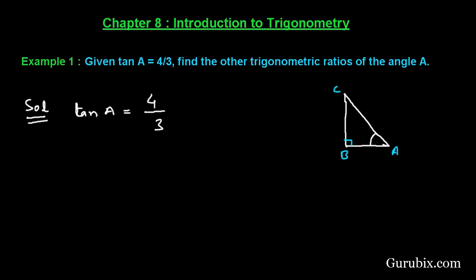We are given that tan A equals 4/3, which equals BC over AB. This is because if A is the given angle, the side opposite to angle A will be perpendicular, this side will be base, and this side will be hypotenuse.